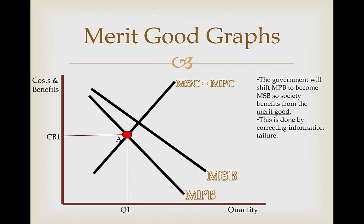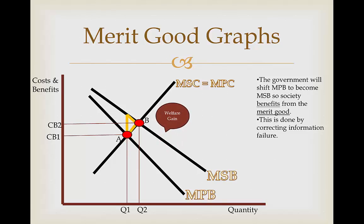This is done by correcting information failure. By correcting information failure and perhaps educating the population on the benefits of fruits, we're going to shift point A to point B, and as a result we're going to reach MSB. This is going to give us a positive externality and therefore a welfare gain. We know this because now we're getting more benefit shown by the cost and benefit axes. Because this is a consumption graph, we are using benefits, and CB1 increasing to CB2 is going to give us more benefits.